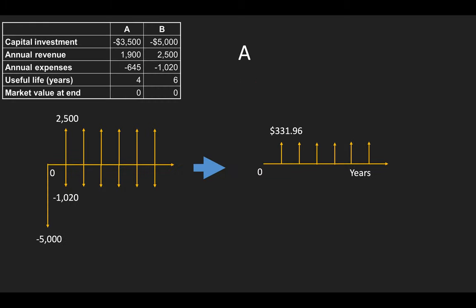For project B — note the label correction — we don't repeat the six-year project to make it 12 years. We just calculate the cash flow once, and the annuity for project B is $331.96. No matter how many times you repeat this project, the annuity will not change.